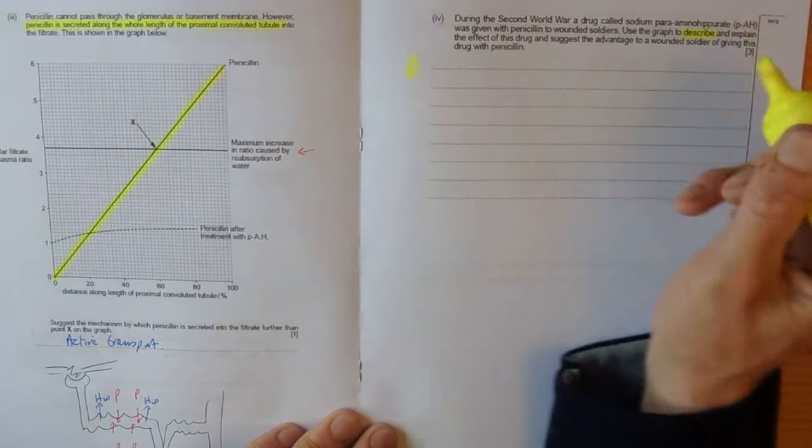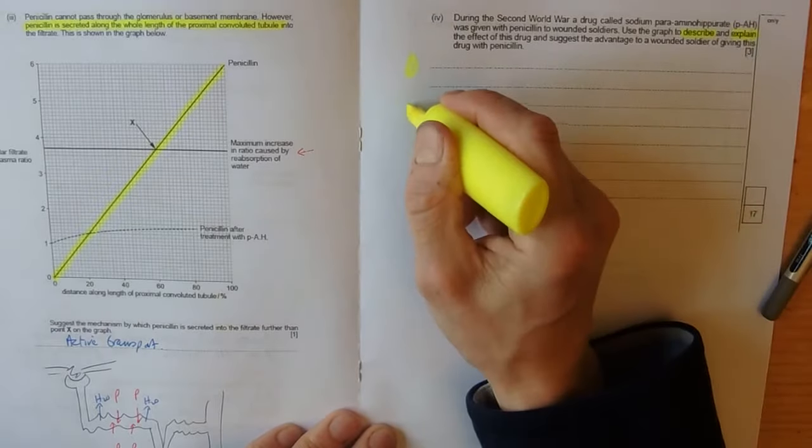Use the graph to describe. So, we're going to describe and explain. We're going to explain the effect of this drug and suggest the advantage. So, there's three marks there. Describe, explain and give an advantage.